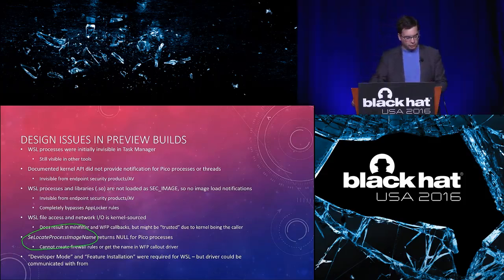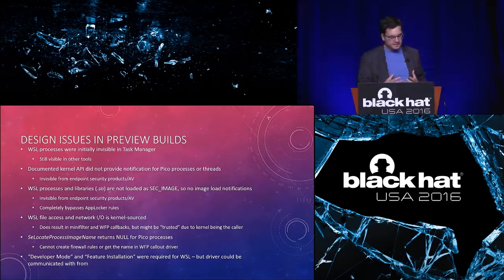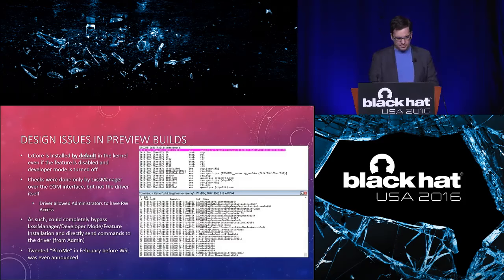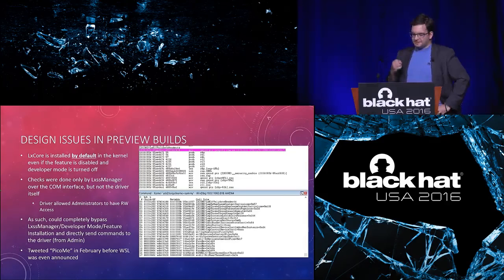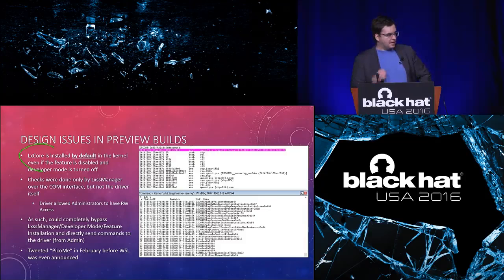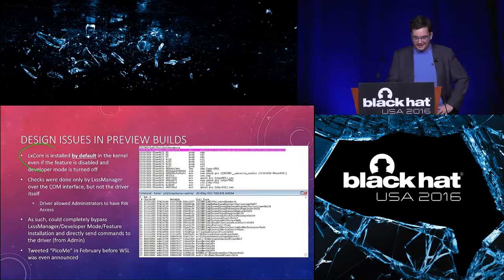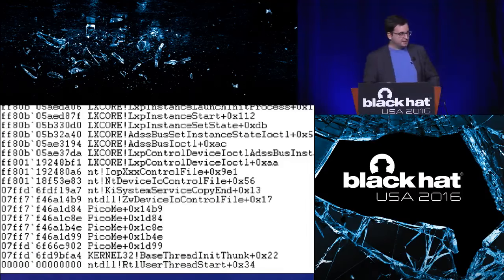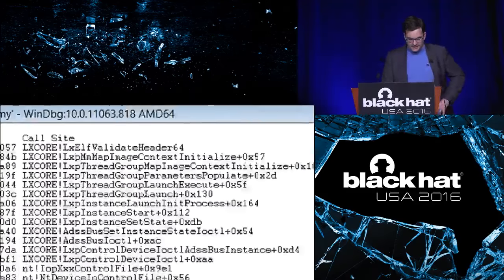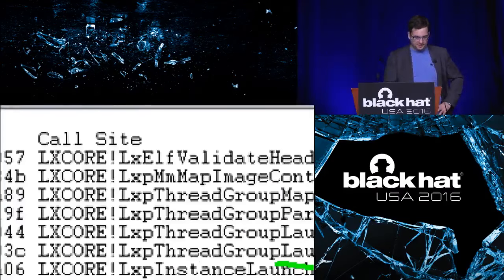File access and network access appeared to come from the kernel because LX Core was doing the access — while it would point to the PID and TID in user mode, the previous mode was set to kernel. An API vendors use to get the name of a process returned null for Pico processes. And all of this was hidden behind a developer mode feature installation, but the truth was LX Core was installed by default. The LXSS Manager did the checks through its COM interface, but the driver itself allowed any admin to talk to it. So regardless of whether developer mode was on, anyone could talk to the driver and create instances.